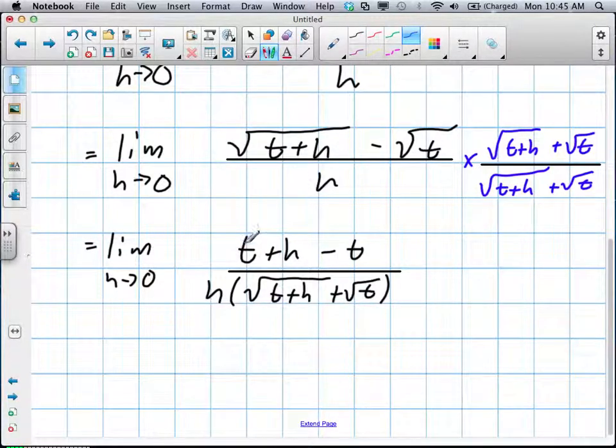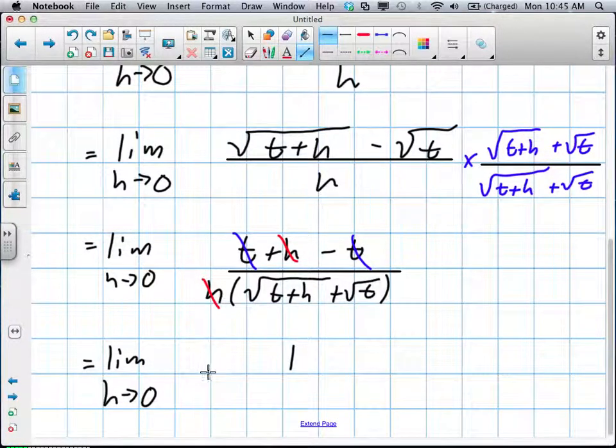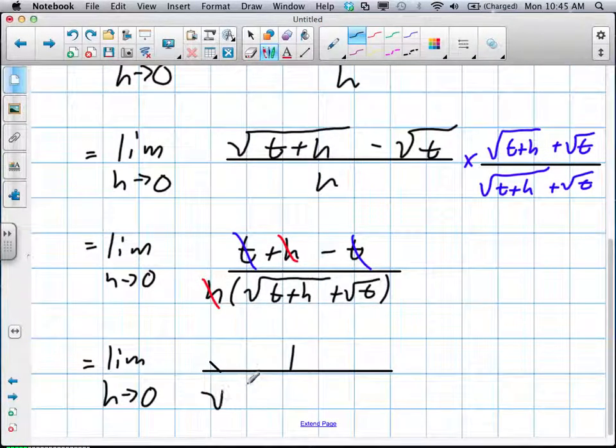You're quickly going to notice we have t, negative t. Those will cancel out or create a 0. Then our h will be the only thing left on top, and we're going to use that to cancel out our h at the bottom. So our limit as h approaches 0 is 1 over [√(t+h) + √t].